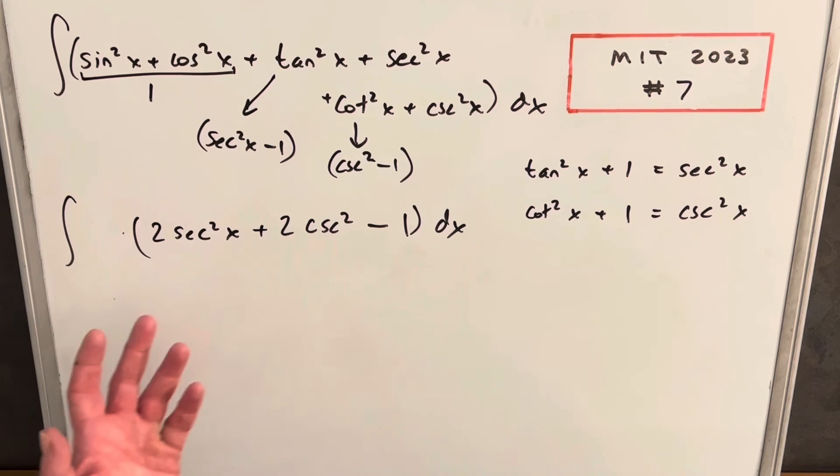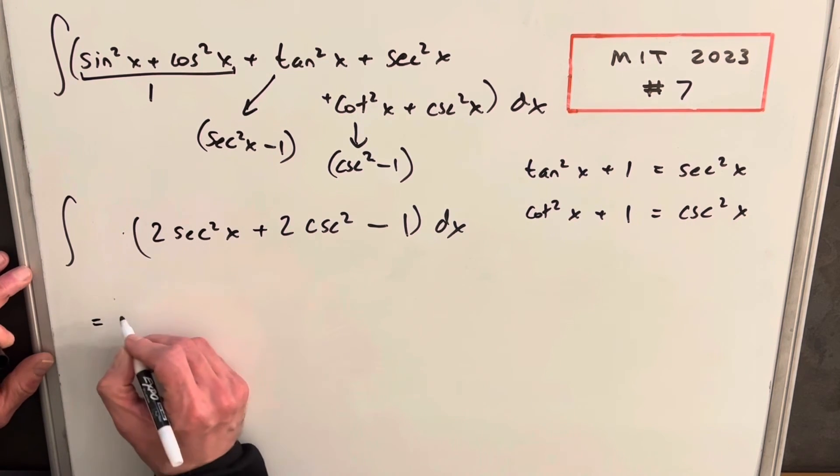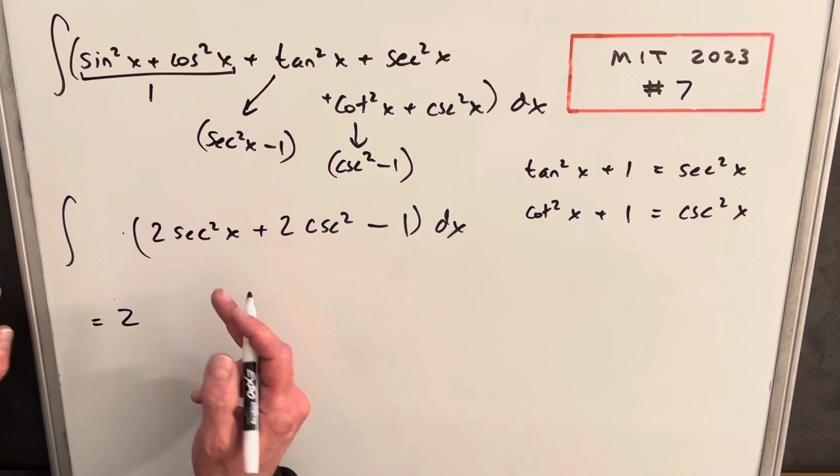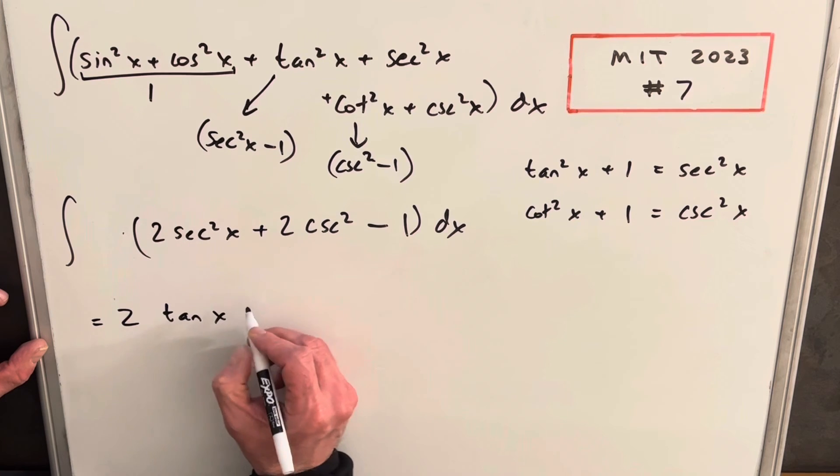And then at this point, I don't see anything better to do except for just integrate this because we have common integrals here for everything. So we'll just have, let's see, we'll have our 2 up front. This will be our final solution. So the integral of secant squared is just tan x.